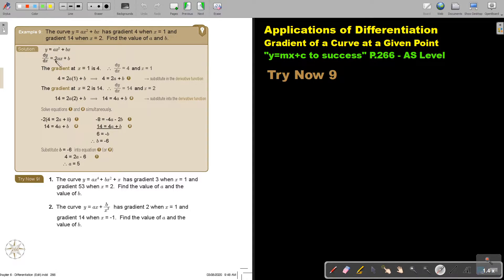There is the function. I differentiate the function. Remember, you are differentiating to X, so just leave the A and the B, they are just constants. The gradient at X is 1 is 4. Therefore, this will be equal to 4 if I substitute 1. So if I substitute 1 in the place of X, I will get it equal to 4. Form one equation. Then the gradient at X is 2 is 14. So substitute 2 and put it equal to 14. Get your second equation.